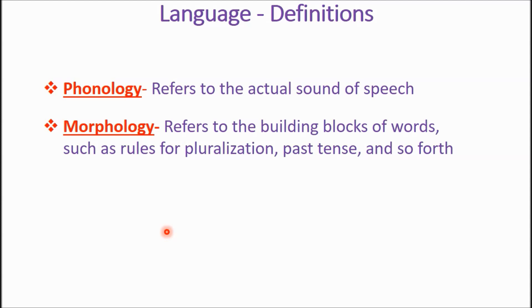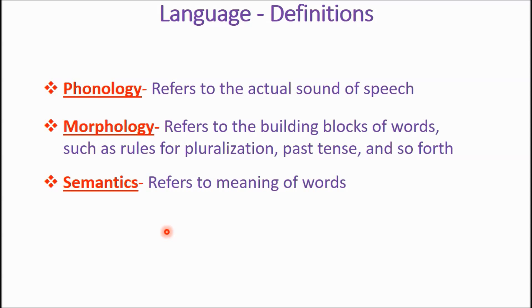So let's say the base word is 'fight.' I can change the morphology by saying 'fighting.' I can change the morphology by saying 'fighters.' That '-er,' that '-ing' — that's changing the morphology when I add that on. That's morphology.